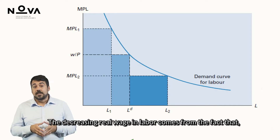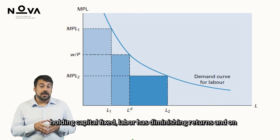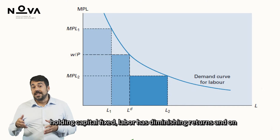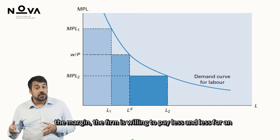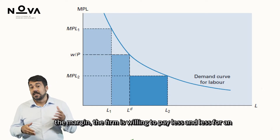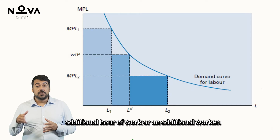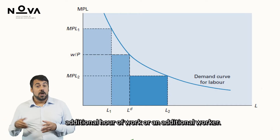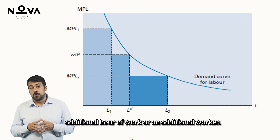The decreasing real wage in labor comes from the fact that holding capital fixed, labor has diminishing returns, and on the margin the firm is willing to pay less and less for an additional hour of work, or an additional worker.